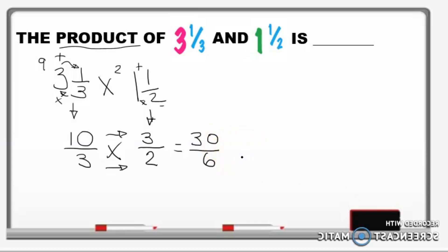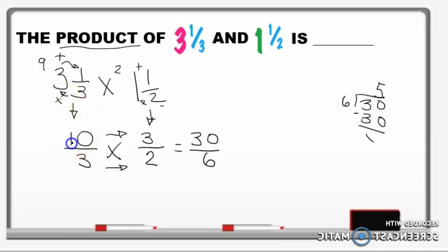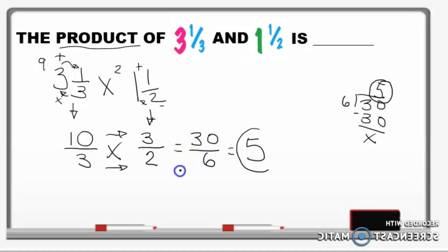So we multiply 10 over 3 times 3 over 2. That gives us 10 times 3 over 3 times 2, which simplifies to 30 over 6, and 30 divided by 6 equals 5. Our answer is 5 — a whole number.